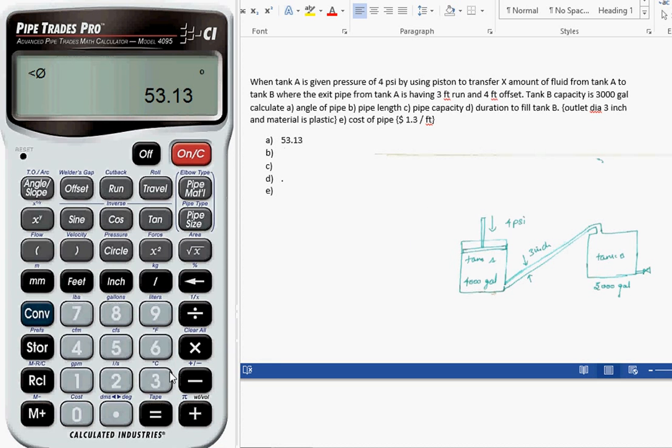Second, we have to calculate the pipe length. Let me calculate it using 3 feet run and 4 feet offset. Here the 3-inch pipe diameter is given. For 3 inches, we need a total length of 5 feet and a fraction of an inch. That inch is negligible, so let's take it as 5 feet.